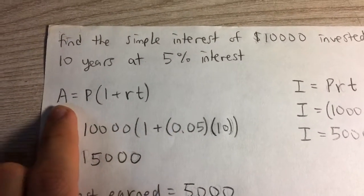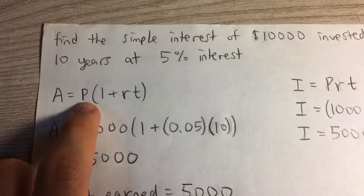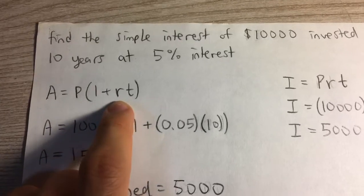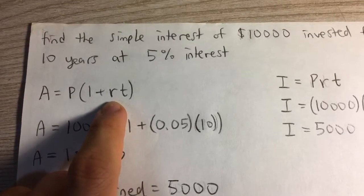It says that the amount you get, the amount of money you have, is equal to the principal P times one plus R, which is the interest rate, 5% interest, times time in years.